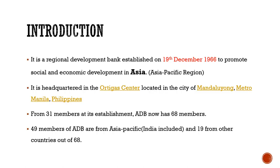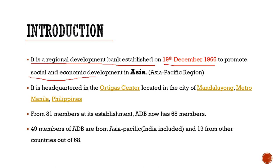First we will see the introduction. The Asian Development Bank is a regional development bank established on 19th December 1966 to promote social and economic development in Asia. It is the regional development bank formed for social and economic development only for the Asian Pacific region.